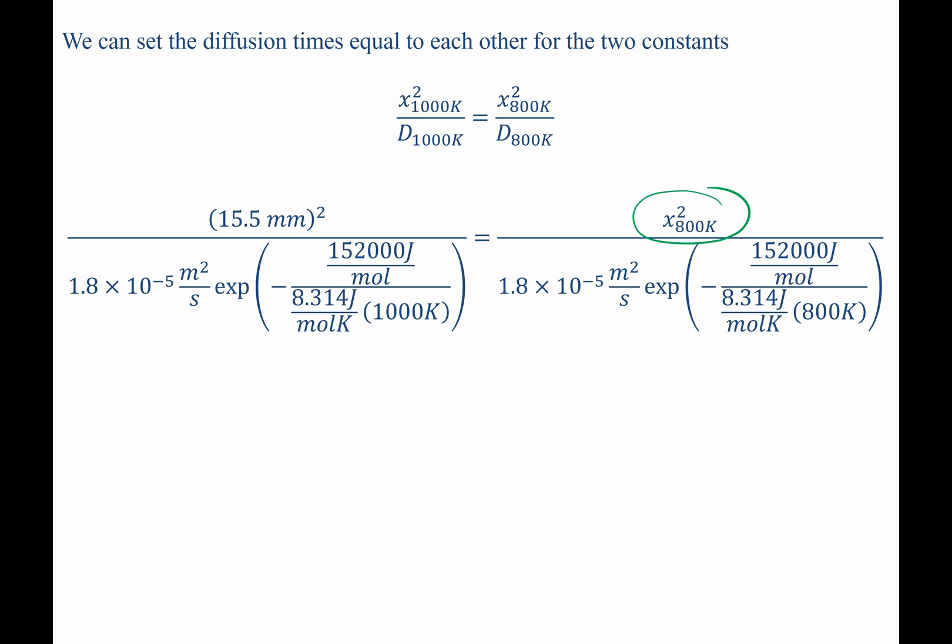Solving for X squared at 800 Kelvin, we find it is equal to 2.465 millimeters squared.